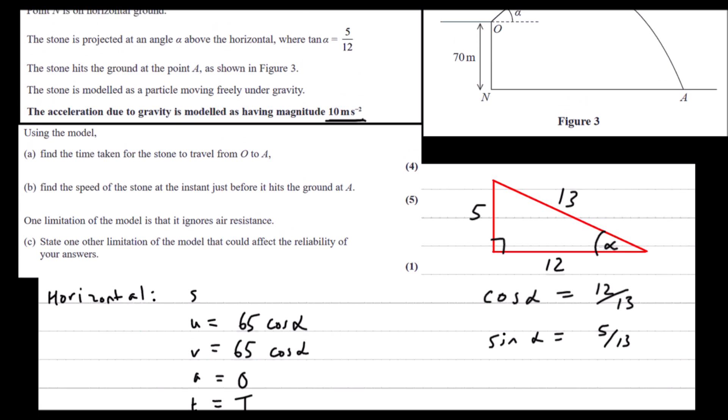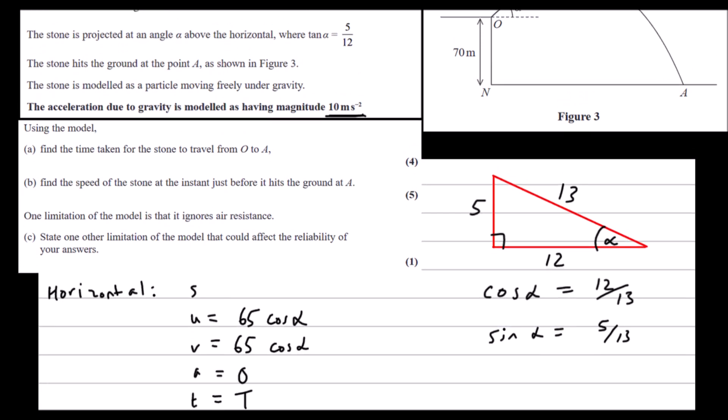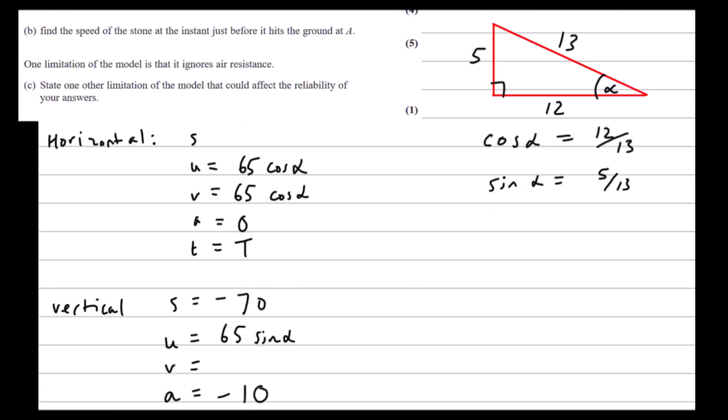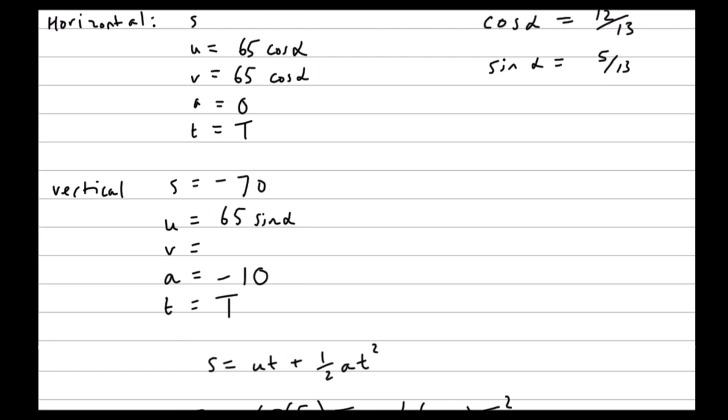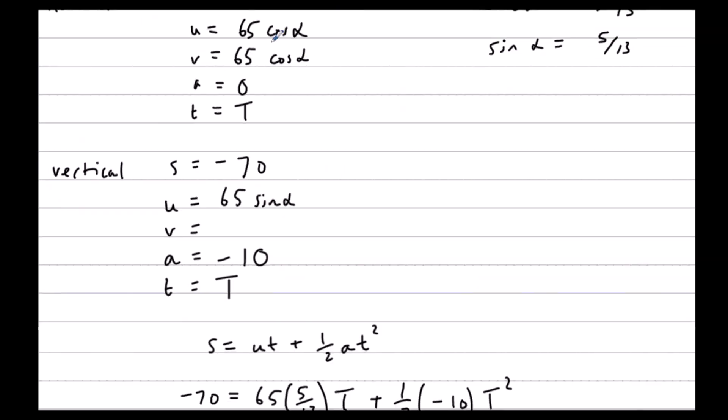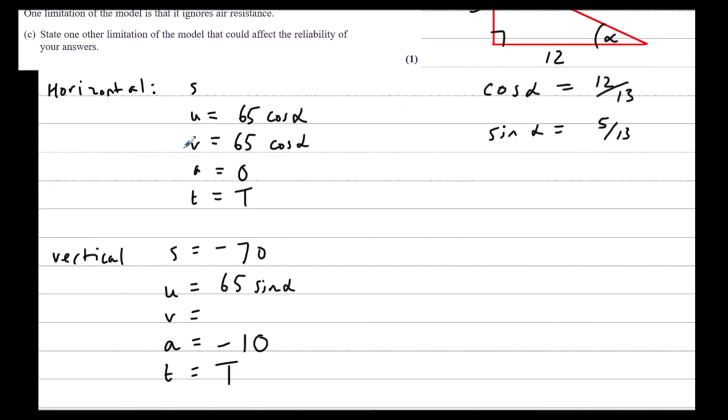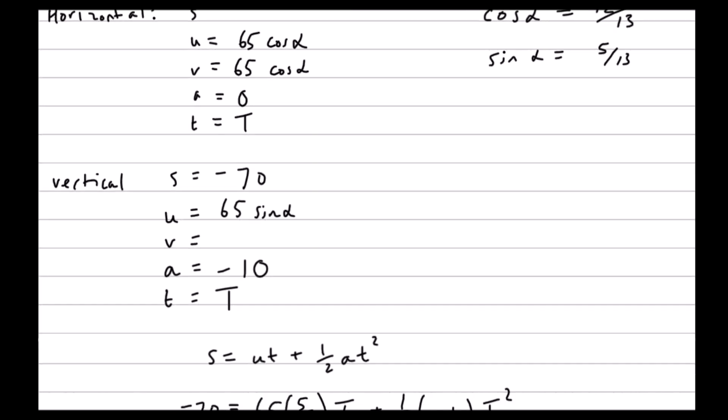Find the speed of the stone the instant it hits the ground at A. So we need the final velocity horizontally and vertically. We've got the velocity horizontally, 65 cos alpha. We need to find it vertically.